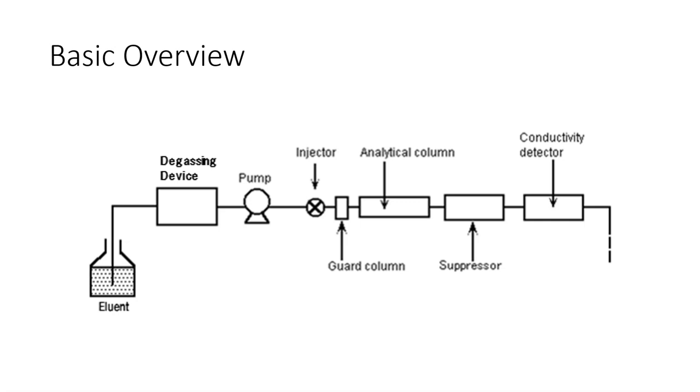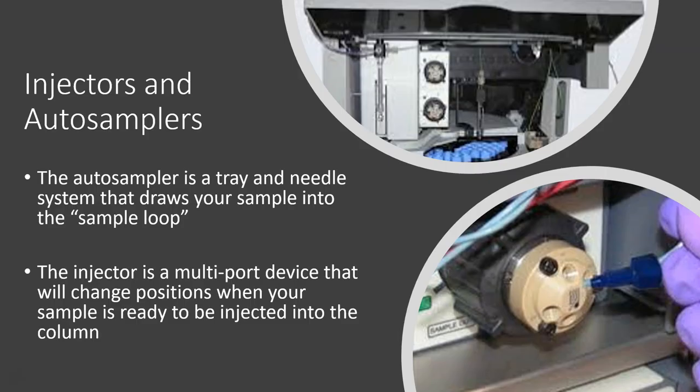Then it makes its way to the columns, but somewhere in here we need to get our sample into the column. So let's talk about how that works. You usually have an injector and an auto sampler. The auto sampler is a tray and needle system that draws your sample into the sample loop. The sample loop is a coil of tubing that holds your sample until it is ready to be injected into the column.